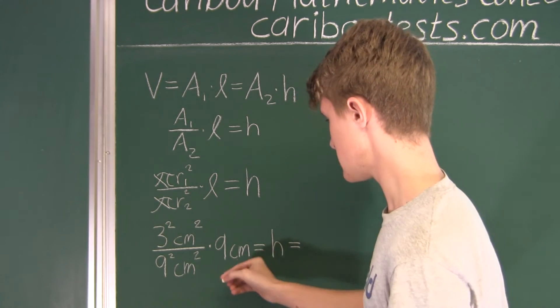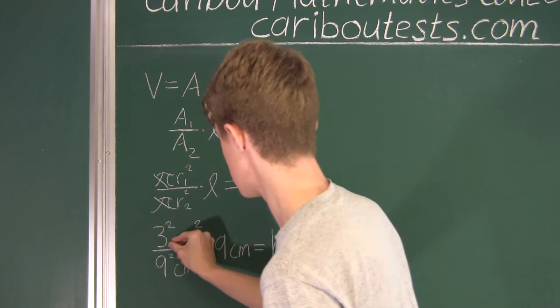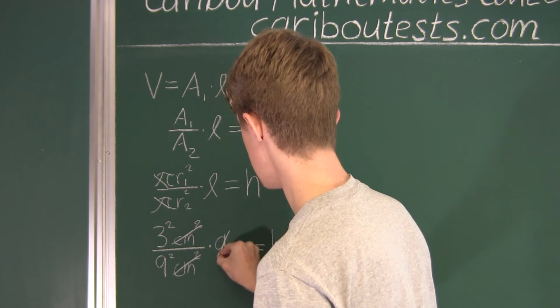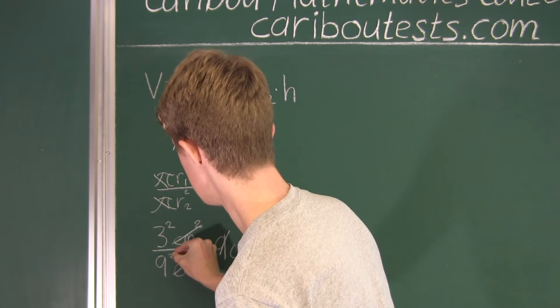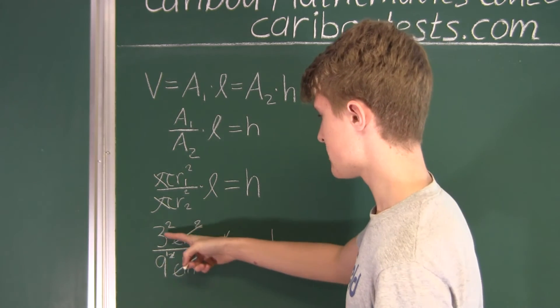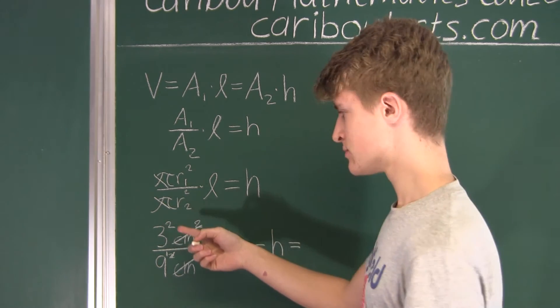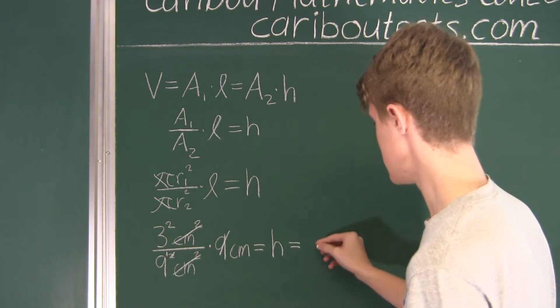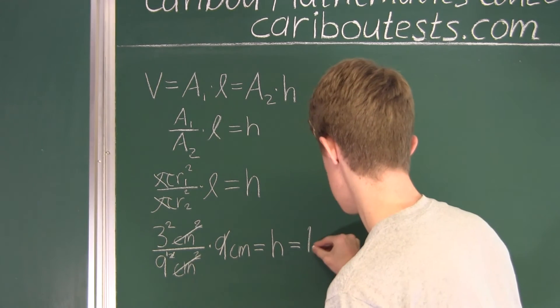All right, so we have centimeters squared and centimeters squared, then we have the 9 and one of the 9. So instead of 9 to the power of 2, now it's just 9 to the power of 1 in the denominator. And here we have 3 squared, which is 9. So 9 over 9 is equal to 1, 1 centimeter, so H is 1 centimeter.